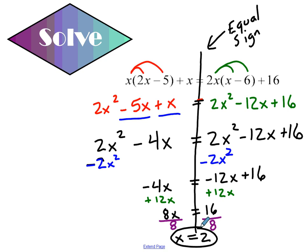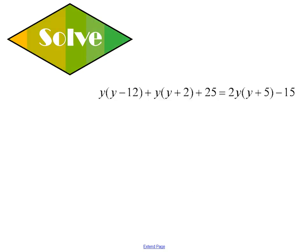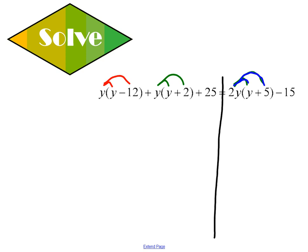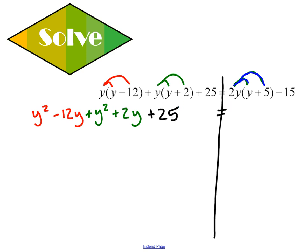We have one more problem to do. Here, once again, I have distributions, and I also have an equal sign, so I need to draw a line right down the middle. y times y is y squared. y times negative 12 is negative 12y. y times y is y squared. y times 2 is 2y. I'm left with a plus 25. On the other side: 2y times y is 2y squared, 2y times 5 is 10y, and then I have a negative 15.